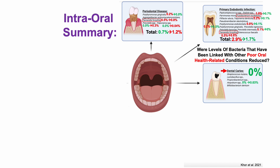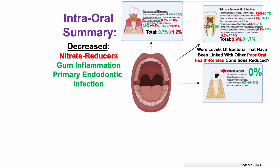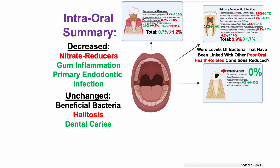For a summary of bacteria linked with conditions in the mouth: decreased levels of nitrate-reducing bacteria are in red (wrong direction). In green (right direction) are decreased levels of bacteria related to gum inflammation and primary endodontic infection. Unchanged were levels of beneficial bacteria — it's unclear what the optimal percentage should be. Halitosis is in red because I don't want high levels of bad breath bacteria. Dental caries remained at 0%, which is good news. And bacteria related to periodontal disease increased, also in red — giving a net of three green, three red, and one unchanged: essentially a neutral effect.